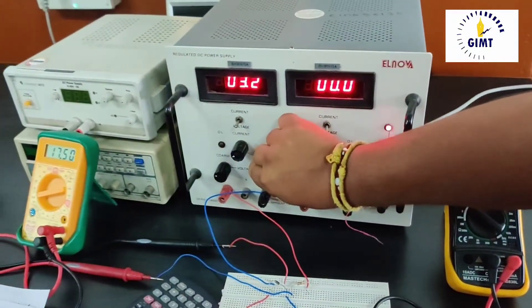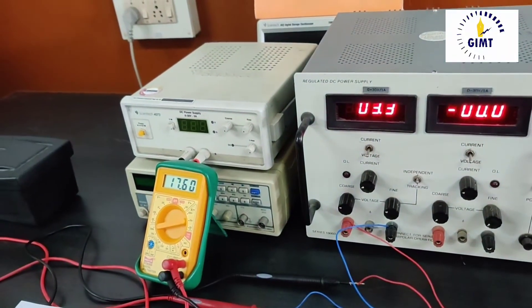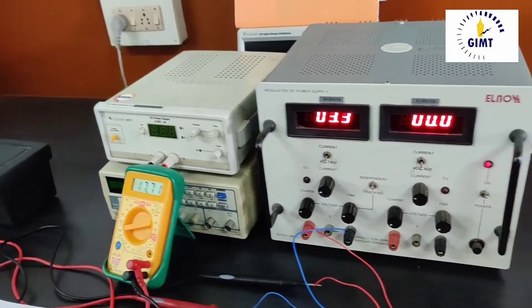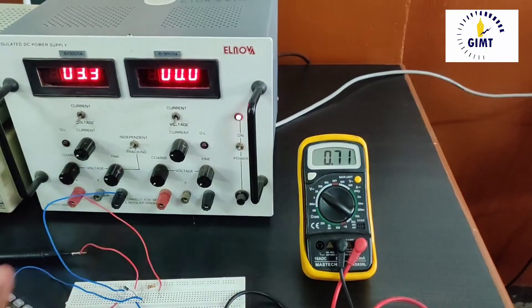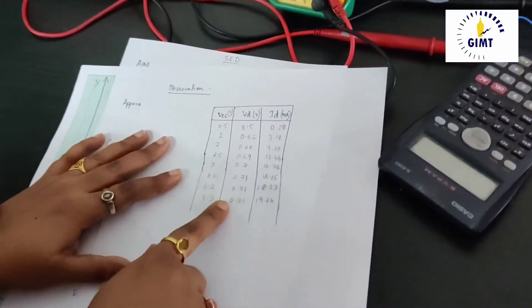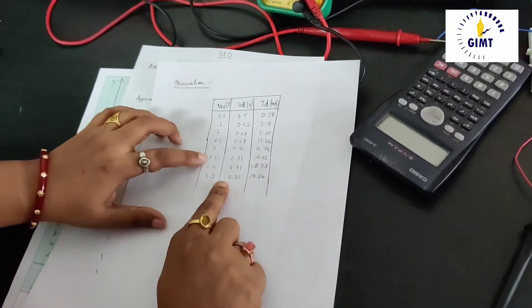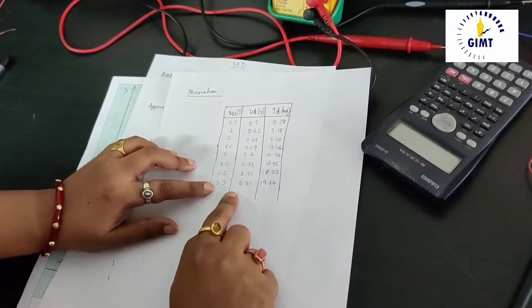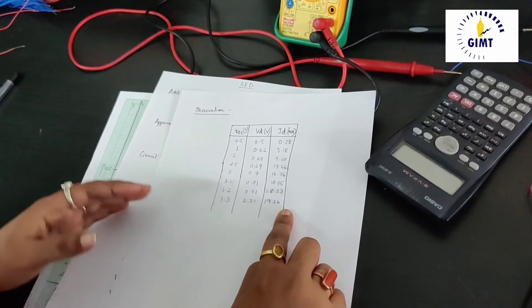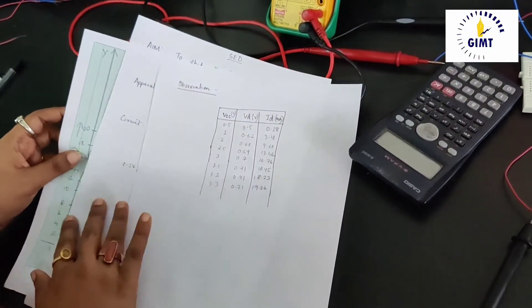At 3.3, if you see the diode current has increased to 18 milliampere and the voltage is constant at 0.71 volt. That means we have got a breakdown voltage for this particular diode at 0.71 volt in the range from 3.1 to 3.3 variable supply Vcc. And the current is correspondingly increasing. This is the breakdown point attained by the diode.